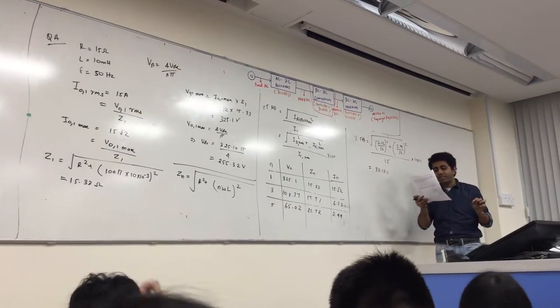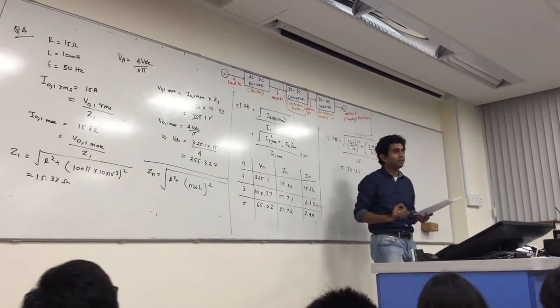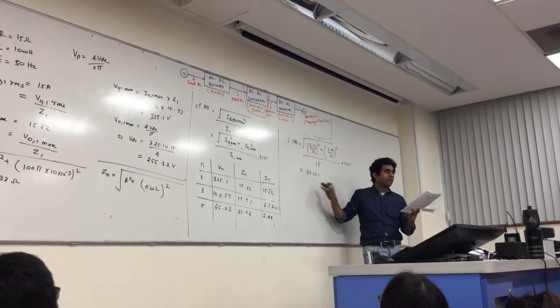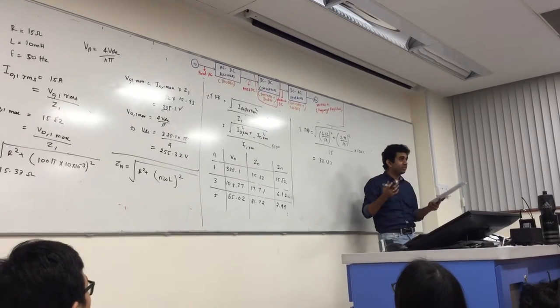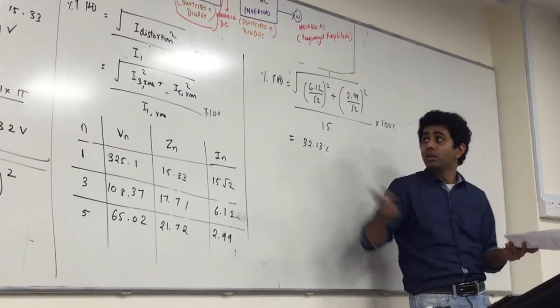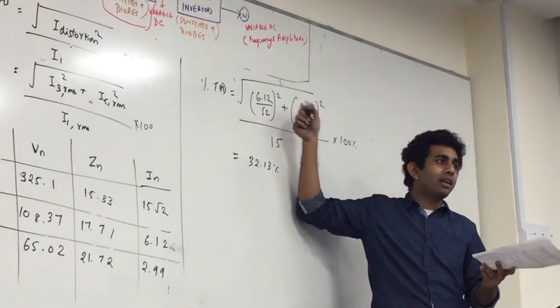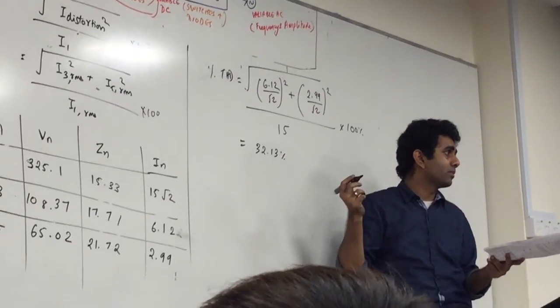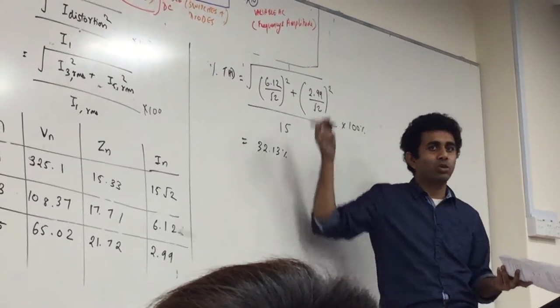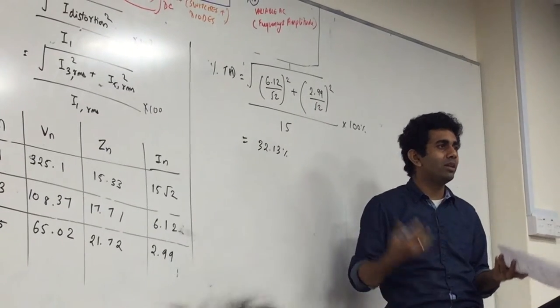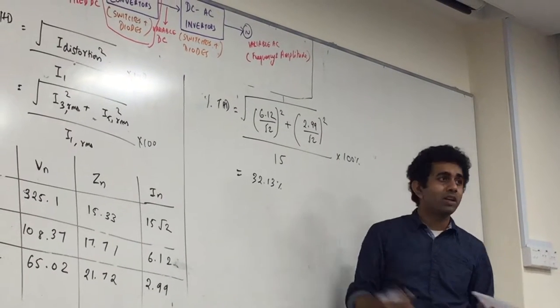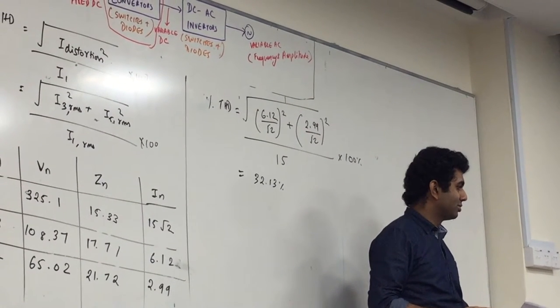It is intended to reduce the THD of the load current to below 15%. Currently it is 32%. Suggest a suitable scheme to achieve it. Which reduction would make it less than 15%? I3 or I5? I can try both, but you'll realize that only if I reduce I3 is going to be less than 15%. Actually it's 14% I think.